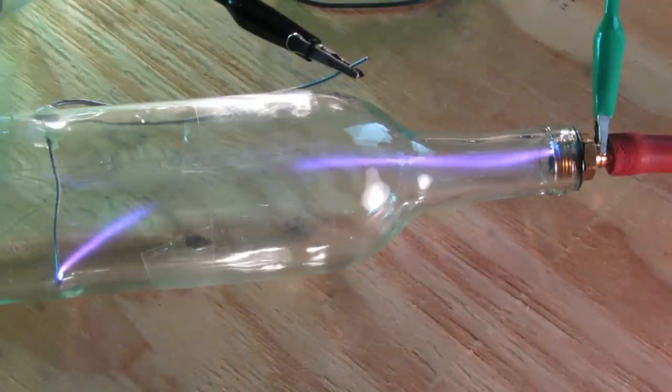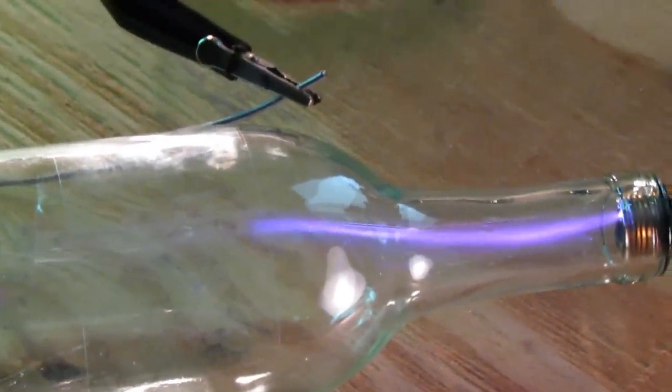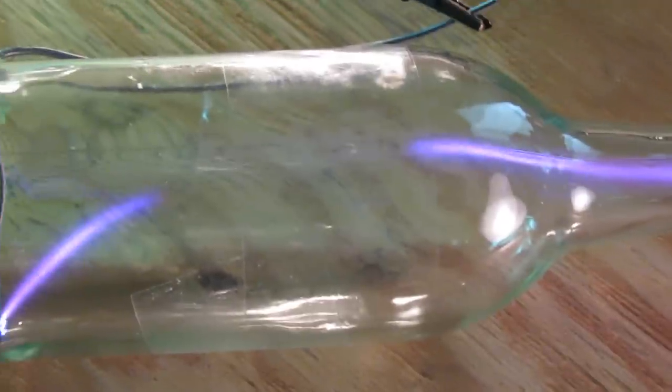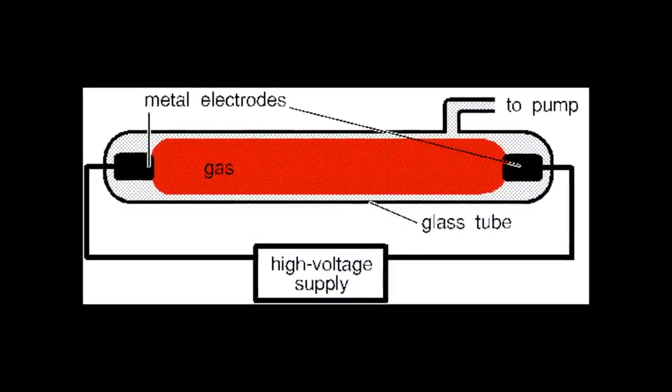The first question I'm going to answer is why the beam glows purple. It has to do with a property called a gas discharge. What happens is, after I pull a vacuum, there is still a little bit of oxygen and nitrogen left in the tube from normal atmospheric air.